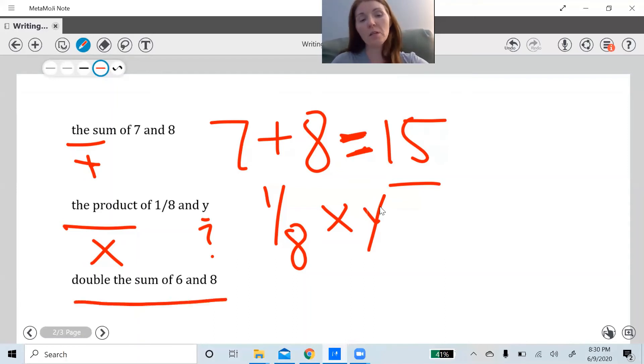Okay, last one. Double the sum of 6 and 8. Okay, so I know double means I'm going to do something twice. You guys learned that in second grade. You learned the double of 4 is 8. The double of 7 is 14 and so on. We're going to do that in a second, but let's start right here. The sum of 6 and 8. I'm going to take those and I'm going to put them in parentheses because I have to do that first.